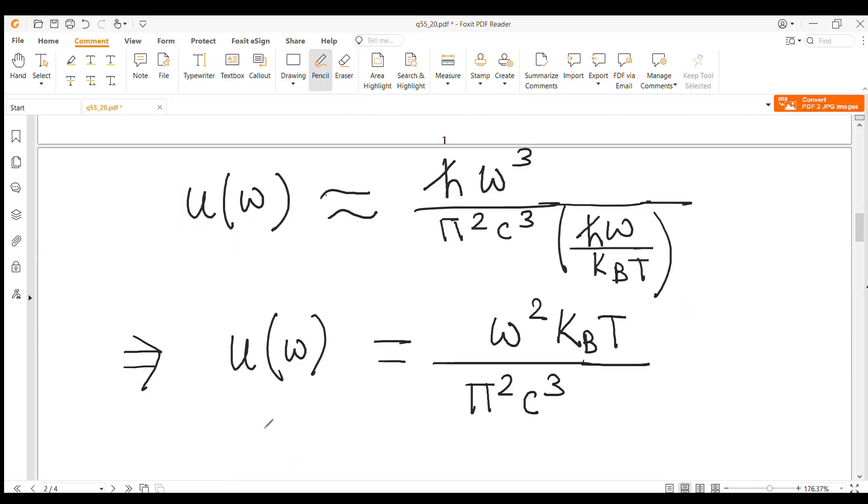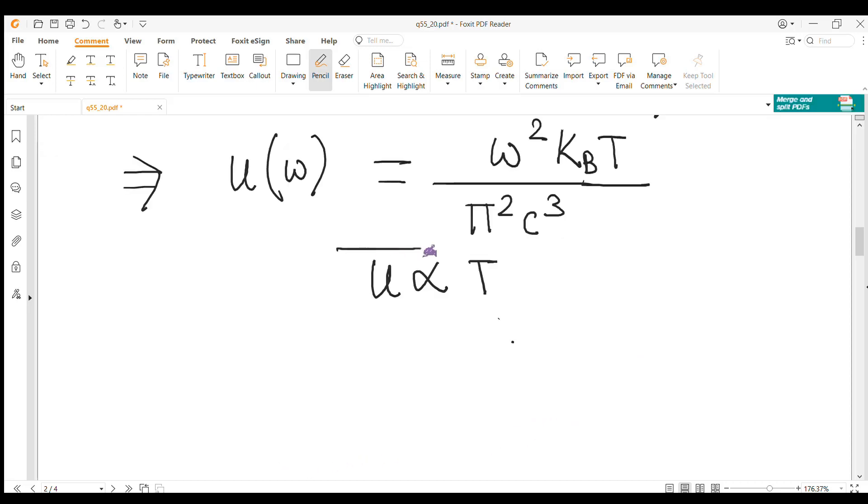After some simplification we get u equal to omega squared kT by pi squared c cubed. So we get u equal to omega squared kT by pi squared c cubed.